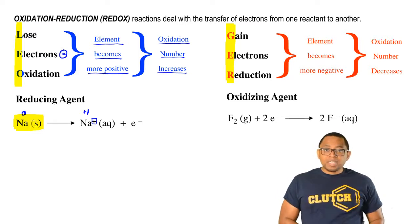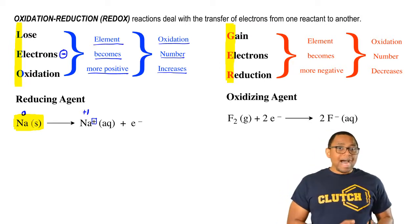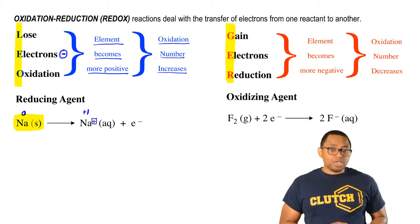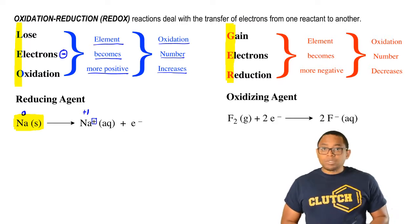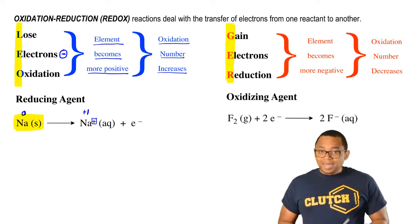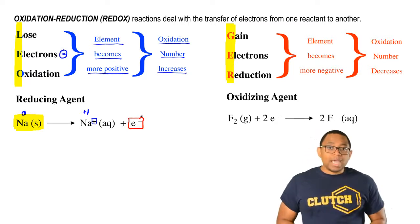Remember, when we're saying something has been oxidized or reduced, that's strictly referring to the reactant. We're only looking at the product to see how the oxidation number has changed, but what's been oxidized or reduced is the reactant. In an oxidation reaction, the electron will be a product.